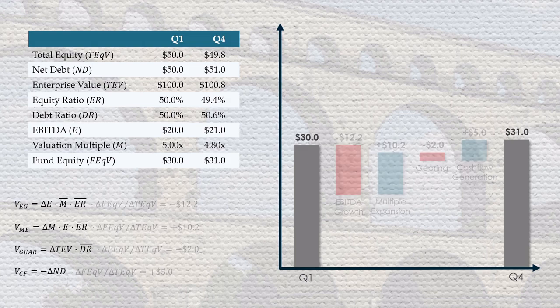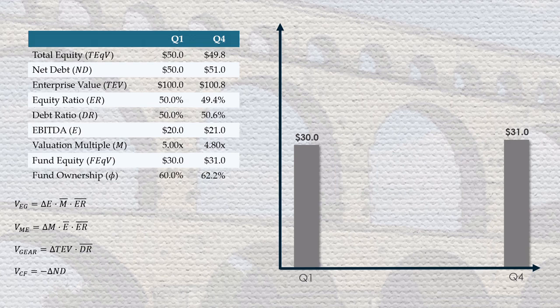To fix this, we must bring the GP's fund ownership percentage into the model. The GP owns 60% of the equity in Q1 and then 62.2% of the equity in Q4. To scale the total equity return to the fund, we multiply each value driver by the average holding period equity ownership — in this case, that's 61.1%.